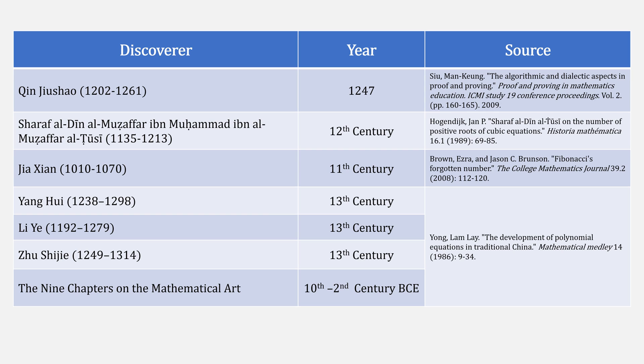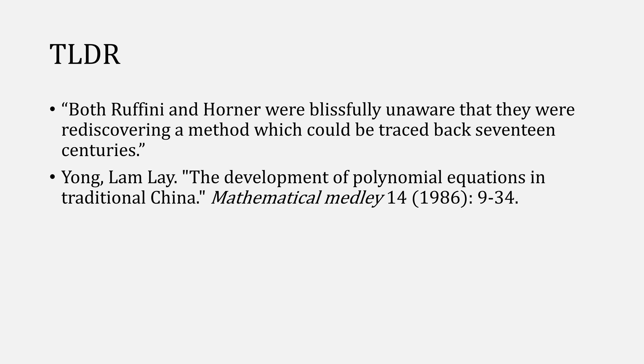And probably the earliest example of Horner's method comes from chapter 4 of the 9 chapters on the mathematical art, which is an ancient Chinese text. And there are likely other examples of Horner's method being discovered earlier, but to make a long story short, I'll leave you with this quote that says, both Ruffini and Horner were blissfully unaware that they were rediscovering a method which could be traced back 17 centuries.